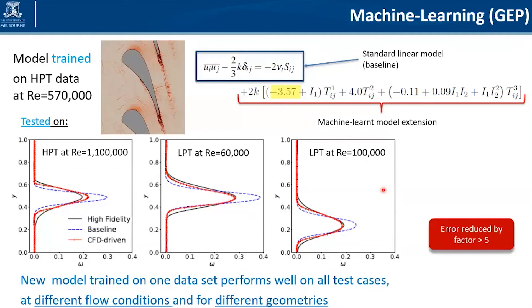The key thing is that we want to find models that have captured the right physics so that we don't have to train again and again for each case. We want to find models that are applicable to a whole class of problems without having to retrain.